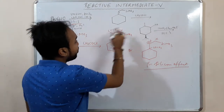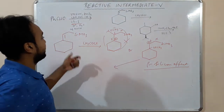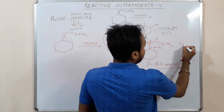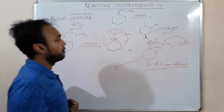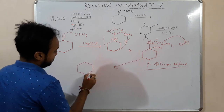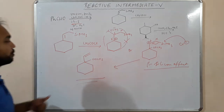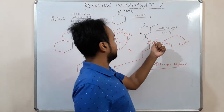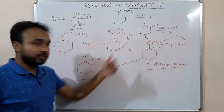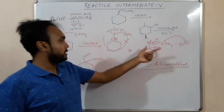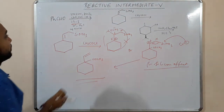The other carbocation will not form. With Cl⁻ present in the reaction medium, Cl⁻ attacks the silicon and a double bond forms. This is called the beta-silicon effect: when a carbocation forms at the beta position relative to silicon, that intermediate is stabilized, and then Cl⁻ attacks silicon to give the alkene product.